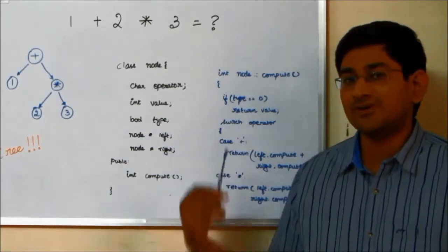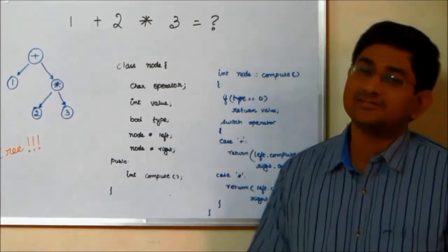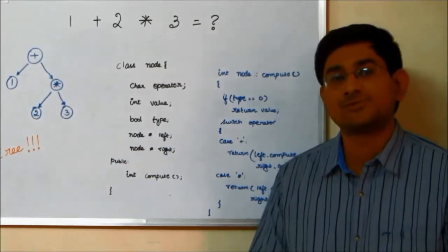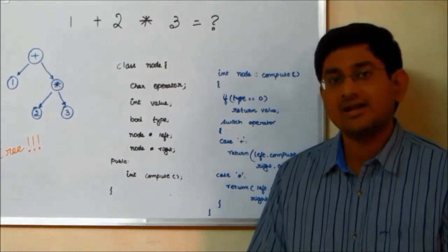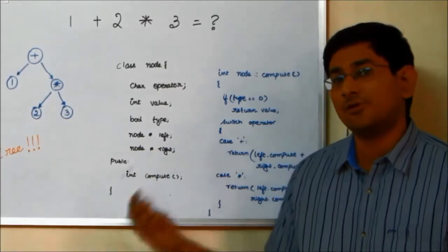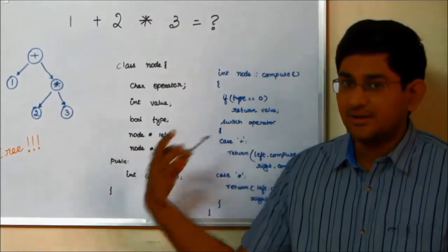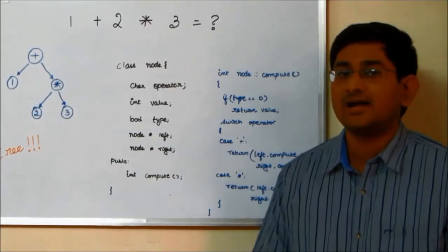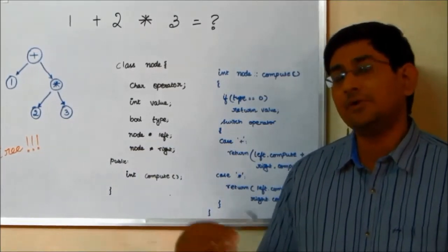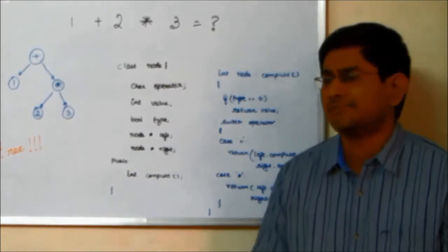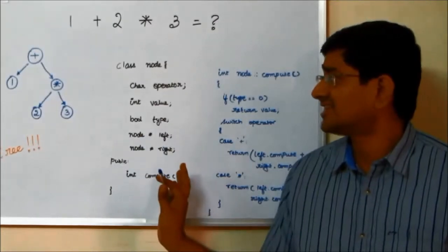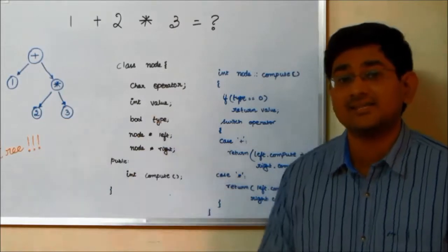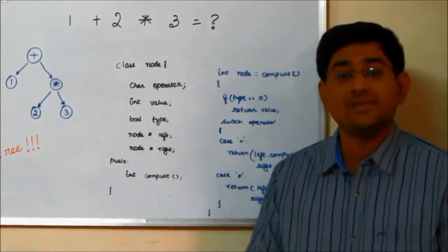And if I go about writing a compute function, this is how it looks. Based on the type, I return the value if I am storing a number in it. And I am going to return the value of node left plus node right if it is an addition operator. And I return node left into node right if it is a multiplication operator. This looks to be a fairly simple statement, a fairly simple function and class.